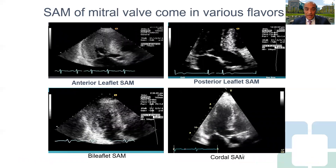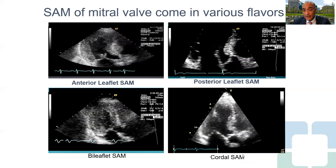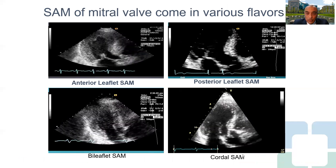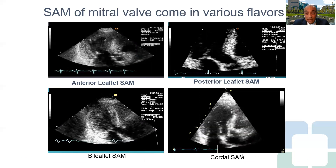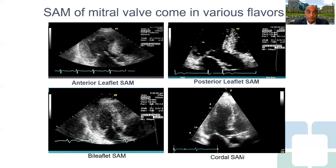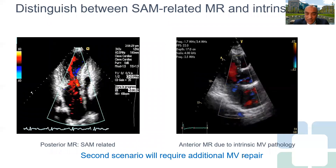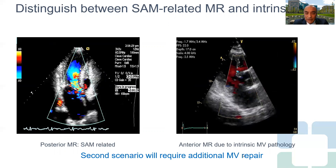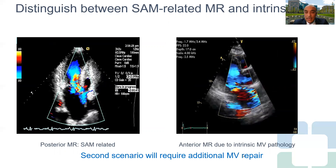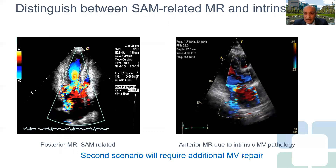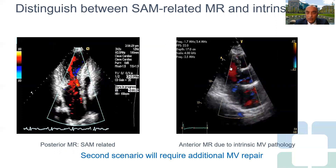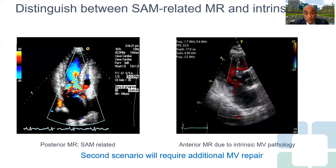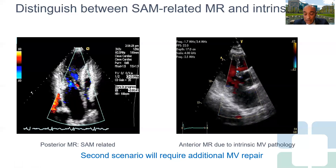Systolic anterior motion of the mitral valve comes in various flavors — anterior leaflet SAM, posterior leaflet, bileaflet, or cordal SAM. Once you recognize this, you need to make sure it is not causing significant outflow tract obstruction. An important thing to keep in mind when contemplating surgical planning: if you have systolic anterior motion-related mitral regurgitation, the jet is posteriorly directed. If you have an HOCM patient with an anteriorly directed jet of MR, you have to worry about an intrinsic mitral valve problem, which may require planning for an additional mitral valve repair.